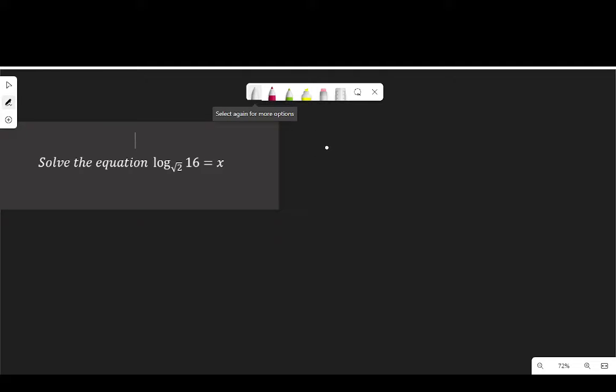So to solve this we need to express it in index form. Have log 16 to base root 2 equal to x. Expressing this in index form, that is square root of 2 to the power of x is equal to 16.